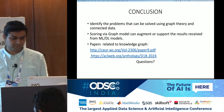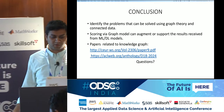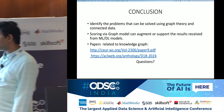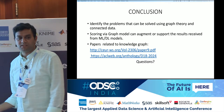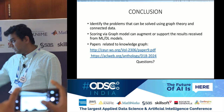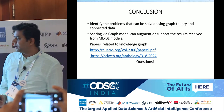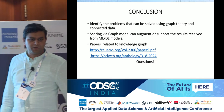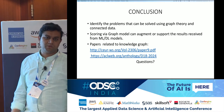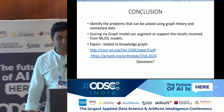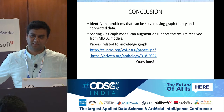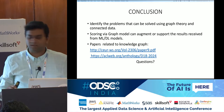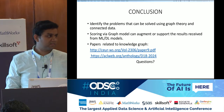In conclusion: identify problems that can be solved using graph theory. Scoring via graph models can augment or support results from deep learning models — you can run them in parallel. There are really good papers on knowledge graphs, including many published by Google. Google Search is now powered by knowledge graph on the backend — all the question-answer results are knowledge graph powered. Thank you.